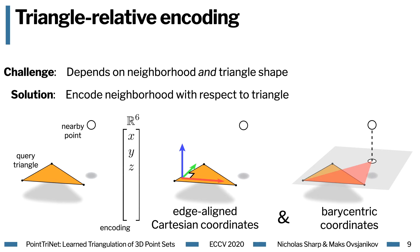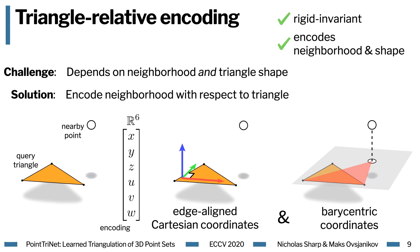The next three coordinates are the barycentric coordinates of the point after projecting it into the plane of the triangle. Using these barycentric coordinates is really important: not only are they a useful feature, but when coupled with the Cartesian data, they implicitly encode the shape of the query triangle. To encode a nearby triangle, we just encode its three vertices and take the max and min. The resulting encodings are rigid and invariant, capturing both the neighborhood arrangement as well as triangle shape, and we find them to be extremely effective in practice.